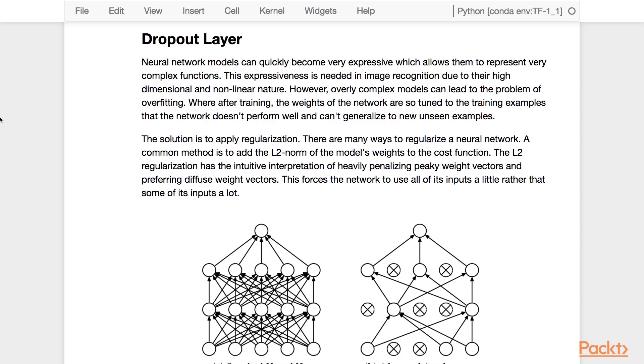There are many ways to regularize a neural network. A common method is to add L2 norm of the model's weights to the cost function. The L2 regularization has the intuitive interpretation of heavily penalizing peaky weight vectors and preferring diffuse weights across the vector. This forces the network to use all of its inputs a little, rather than some of the inputs a lot.